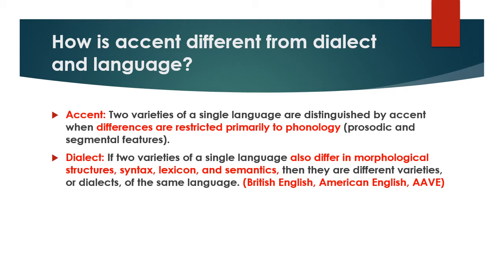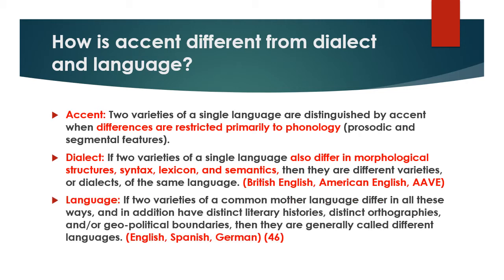Consider British English, American English, and African American Vernacular English — they're all Englishes, but they have different words, different sentence structures sometimes, and different meanings. These varieties would be called separate languages if they differ in all these ways — phonology, sentence structures, vocabulary — and also if they have distinct orthographies or writing systems, or exist in different geopolitical boundaries. So English, Spanish, and German are three different languages.